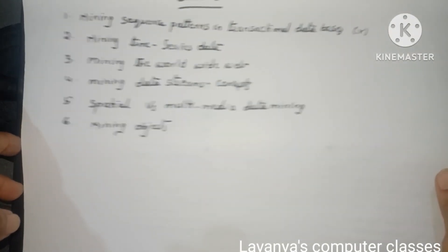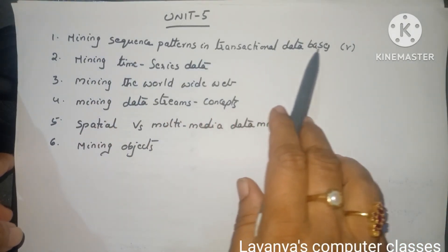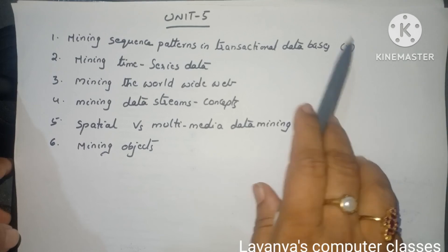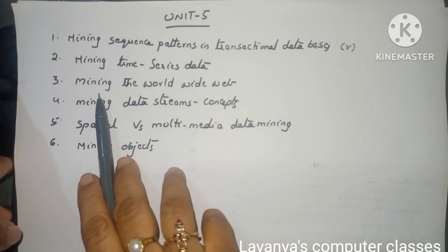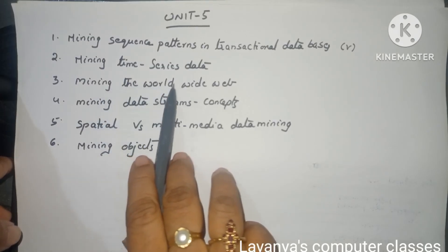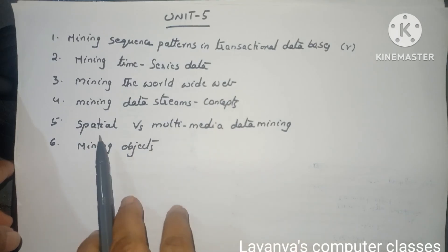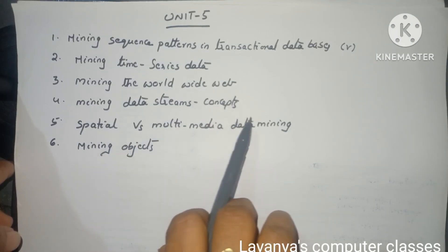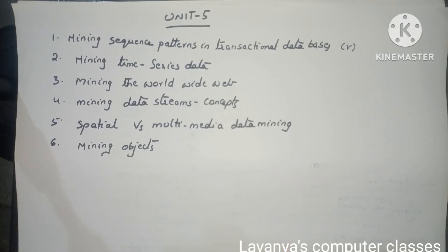The important questions in unit 5 are: mining sequence patterns in transactional databases — a very very important question. Explain mining time series data, explain about mining the World Wide Web, mining data streams concepts, difference between spatial versus multimedia data mining, and explain about mining objects. Read all these concepts and it will be very easy to attempt all the questions in data mining.